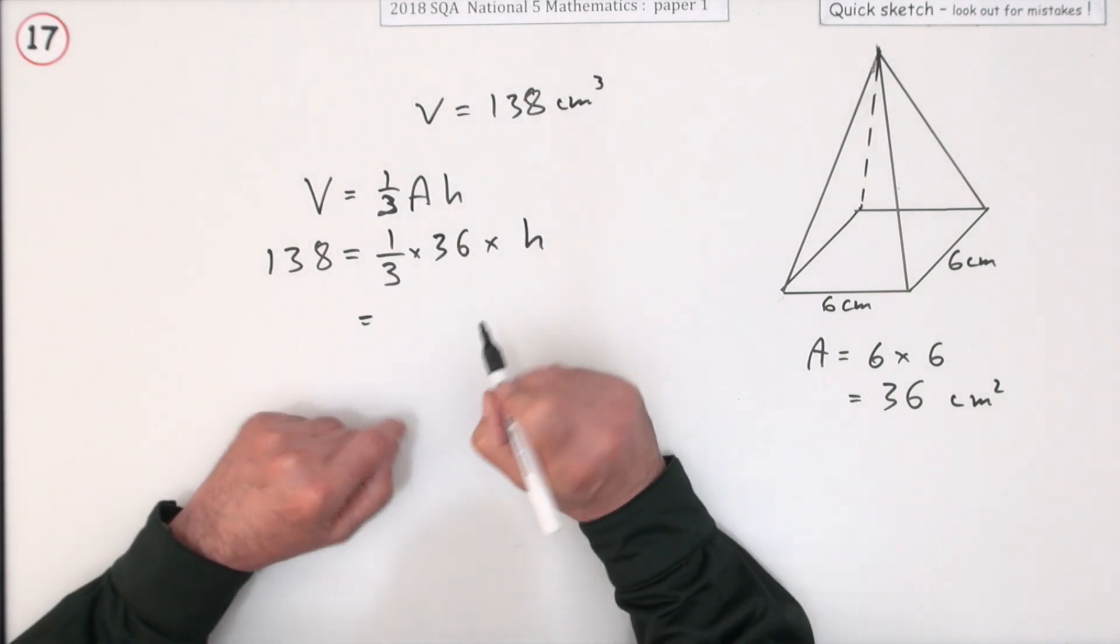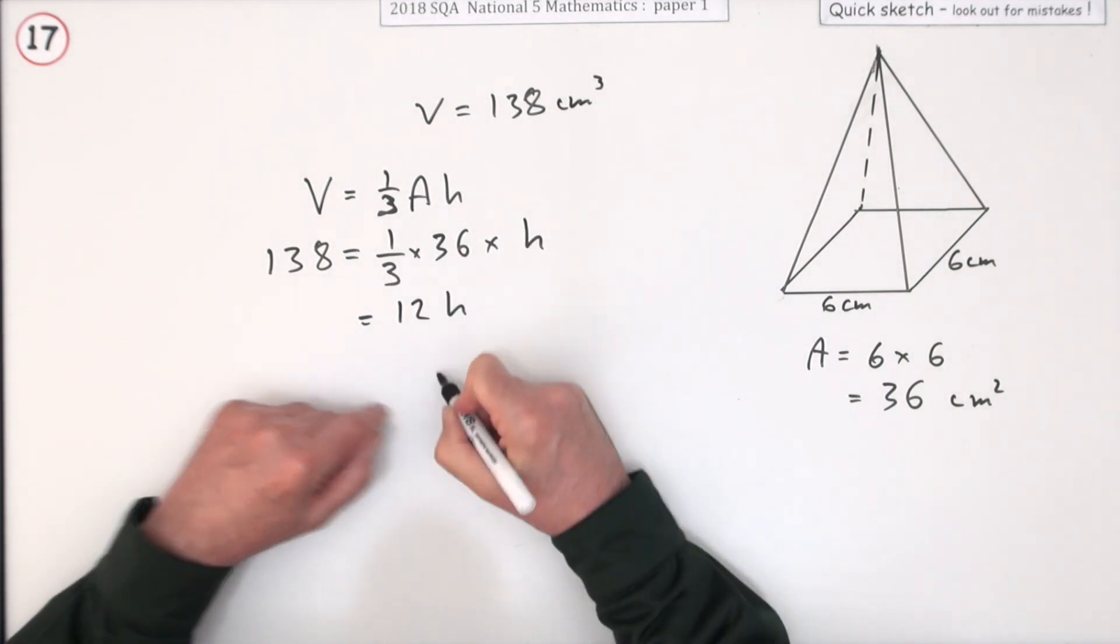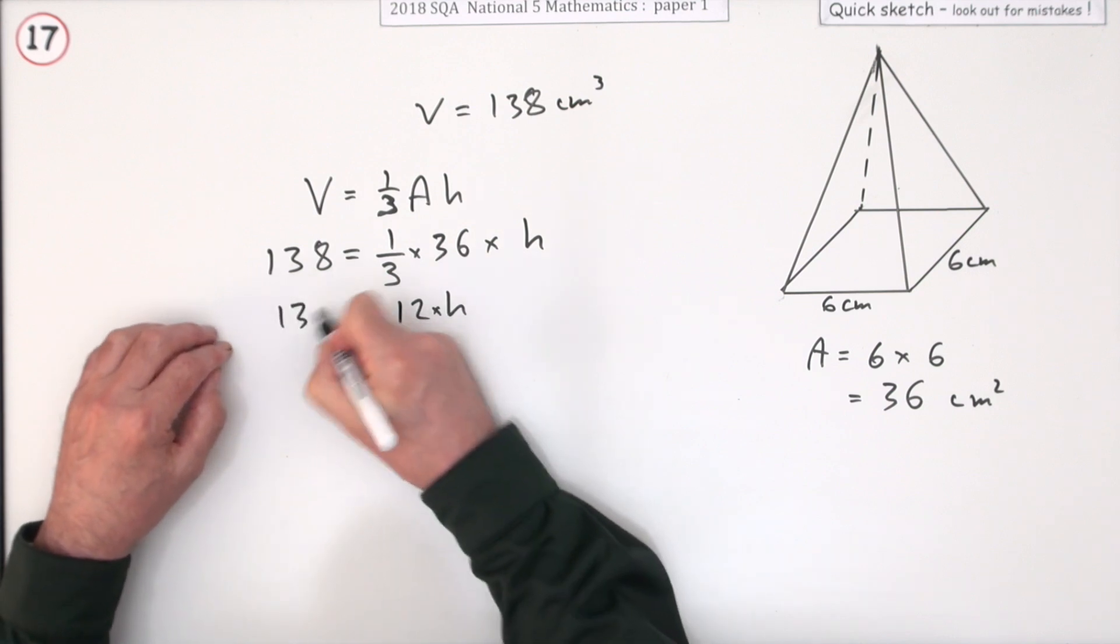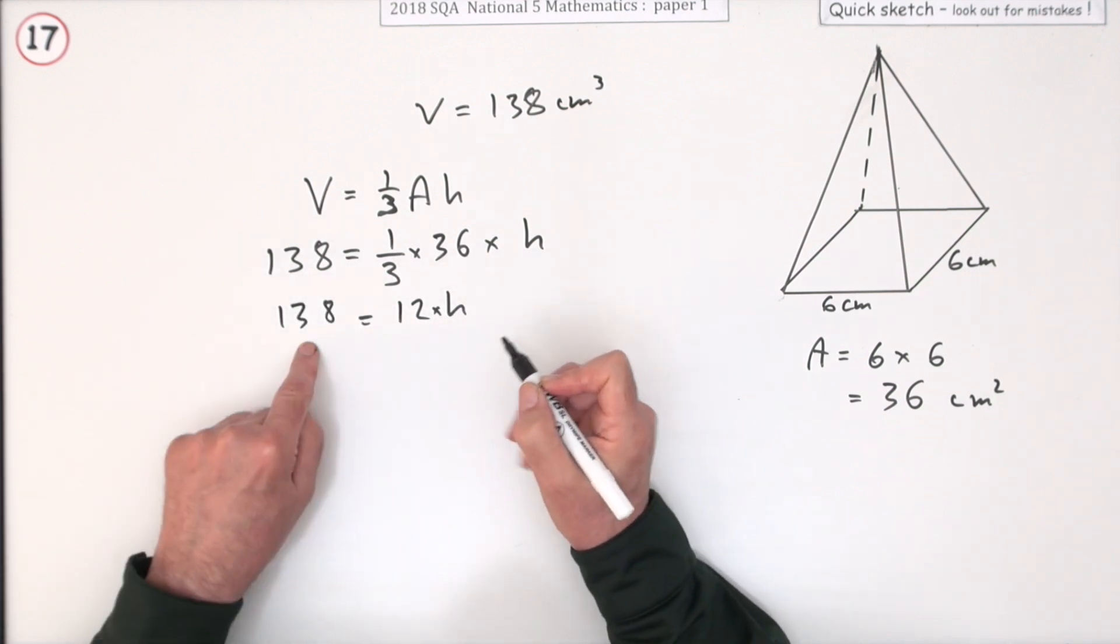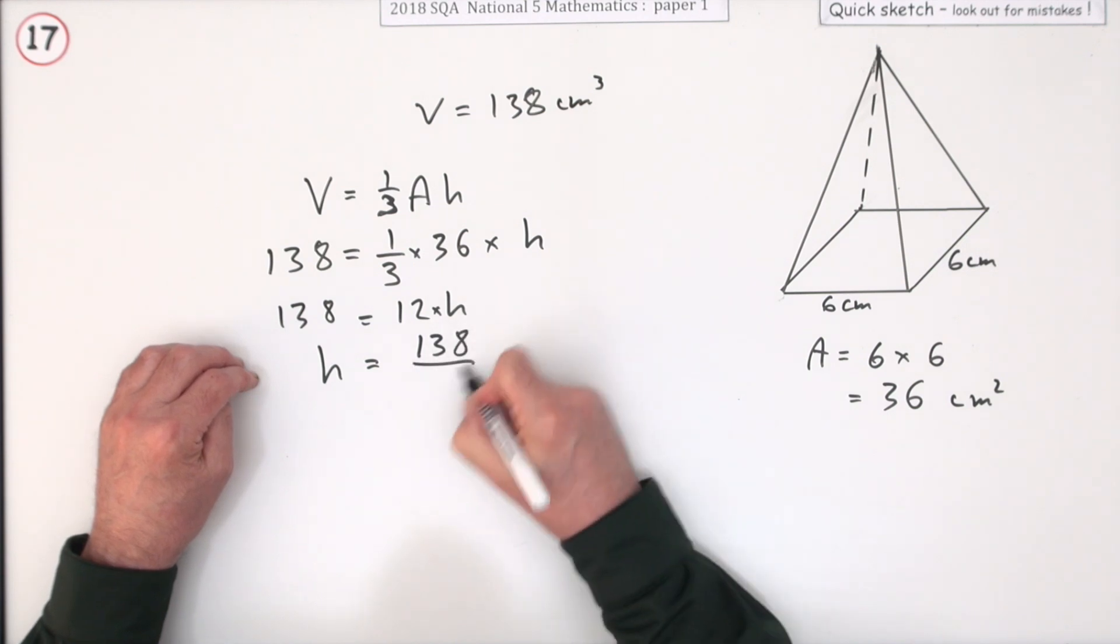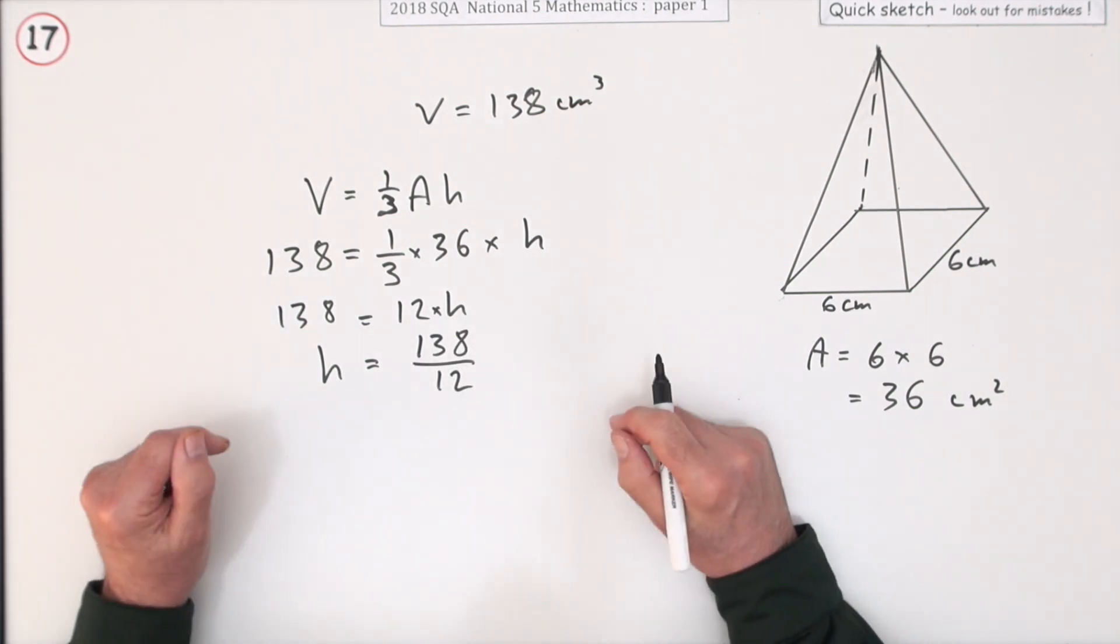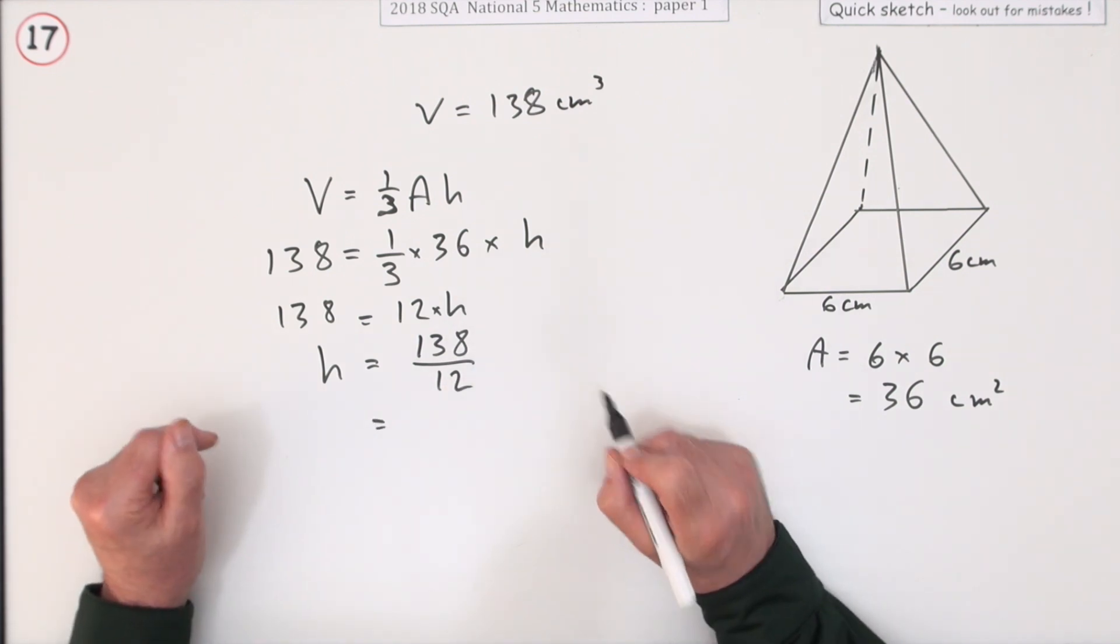You could simplify this side a little bit first. Three into 36 goes 12. So it's 12 times h. Take that across and I'll just write it the other way around and that'll be your answer. 138 over 12. And then you go, oh no, how do you do that?